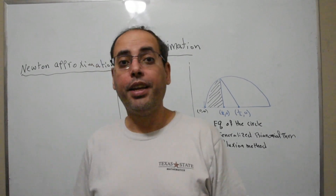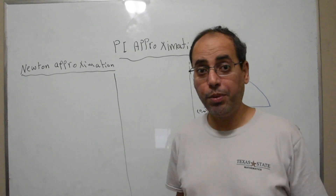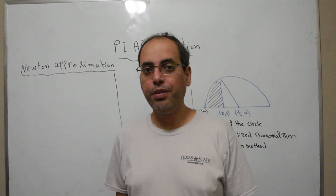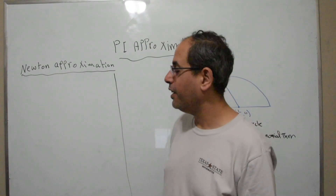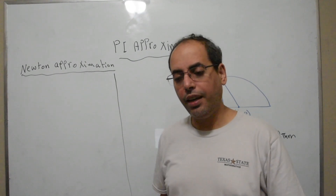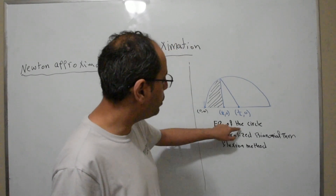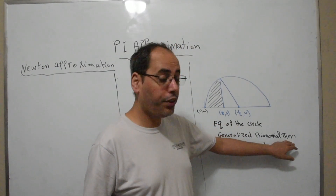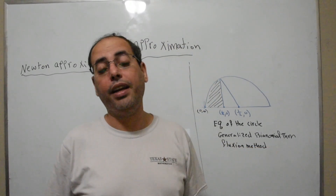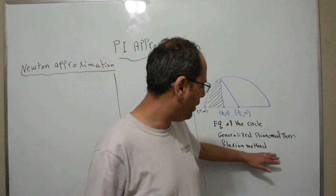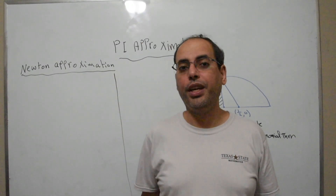Today I'm going to explain how to approximate the value of pi using Newton's approximations. It is a really interesting method — one of the most interesting methods through the history of mathematics. In this approximation I'm going to use three things plus the Pythagorean theorem: the equation of the circle, the generalized binomial theorem by Isaac Newton, and the fluxion method, also by Isaac Newton. This is similar to how we introduce the area under the curve, which is why we call it today integration.